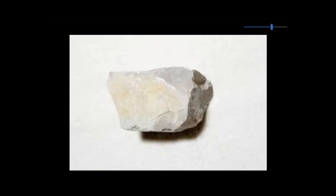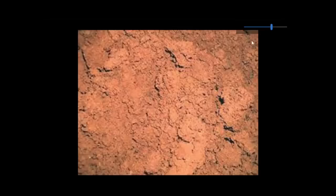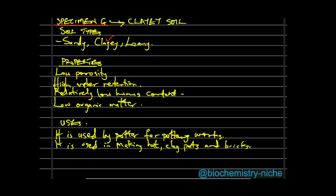This is an example of clay soil — it has a red or brown color. Here is a comparison between the three soil types: sandy soil, loamy soil in the middle, and clay soil on the right, showing the characteristic brown or red color.